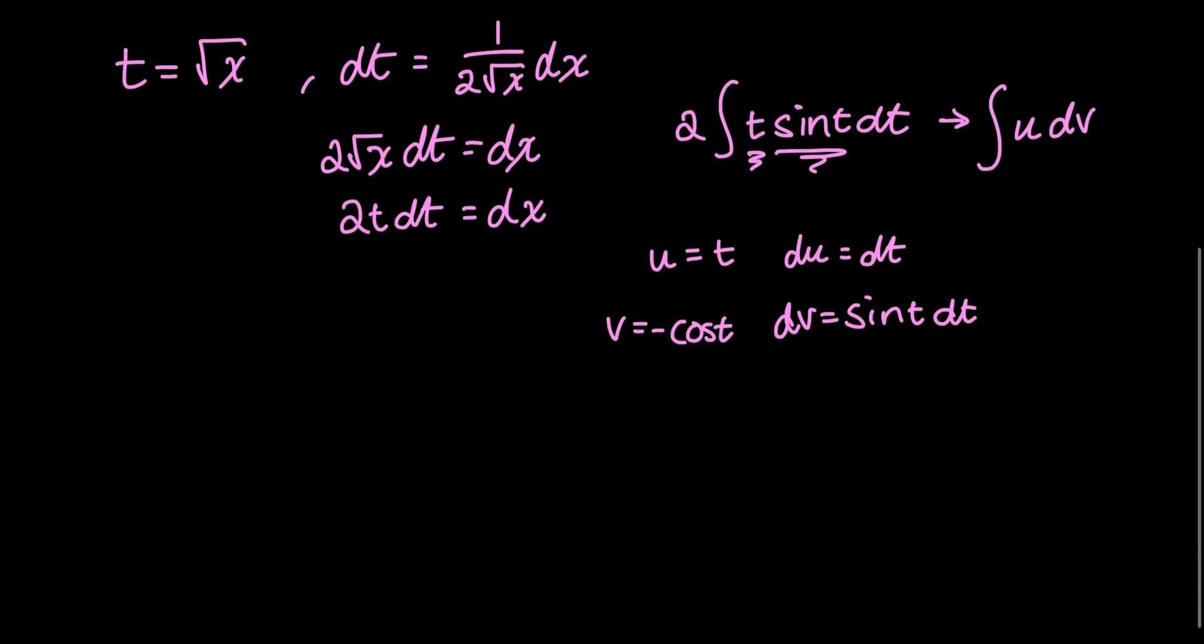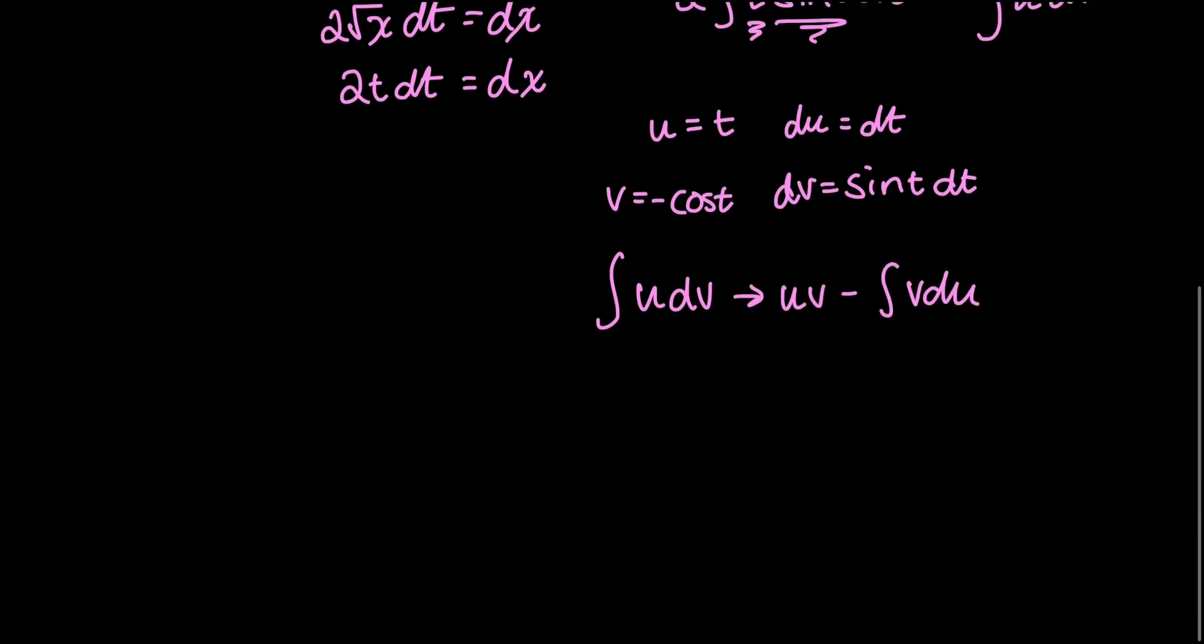Now you can plug it into your integration by parts formula. If you have an integral in this form, then integration by parts dictates uv minus the integral of vdu is the way to go about this.